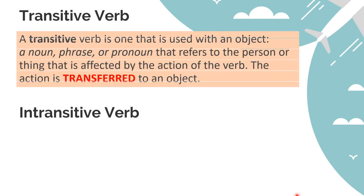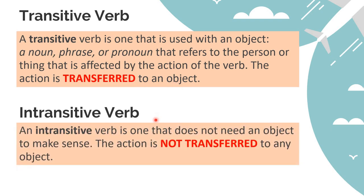A transitive verb is one that is used with an object - that is, a noun, a phrase, or a pronoun that refers to the person or thing affected by the action. The action is transferred to an object. An intransitive verb is one that does not need an object to make sense; the action is not transferred to any object.